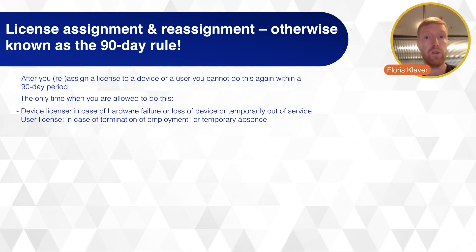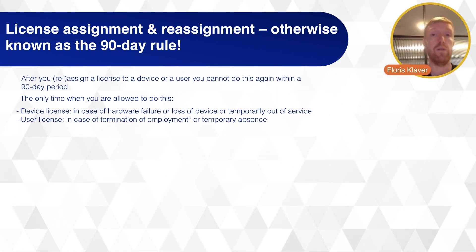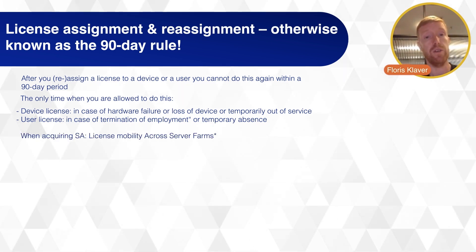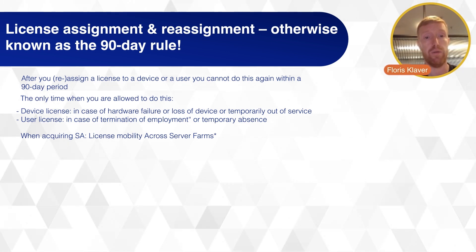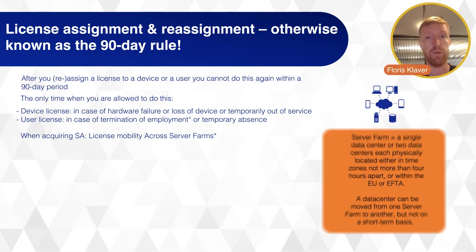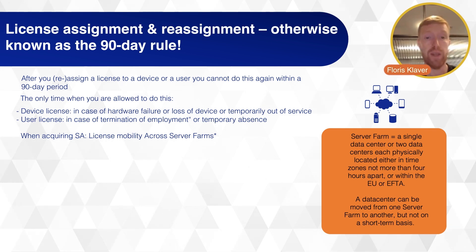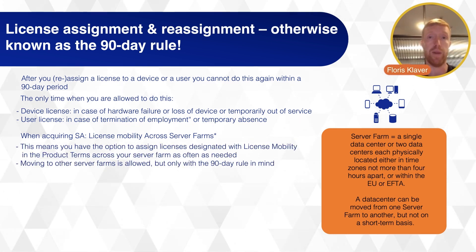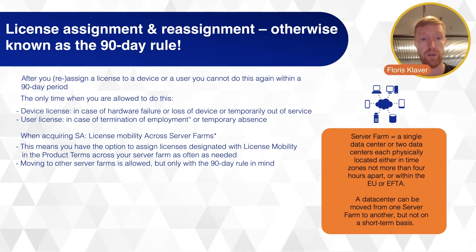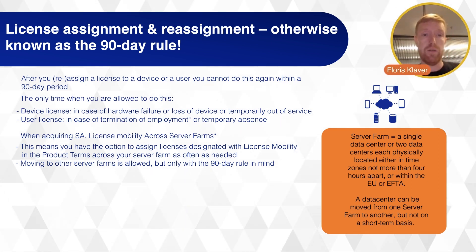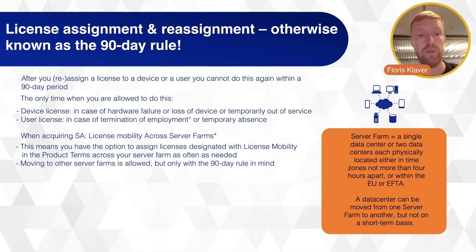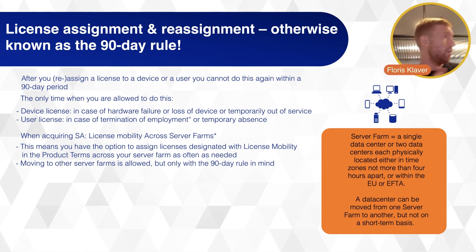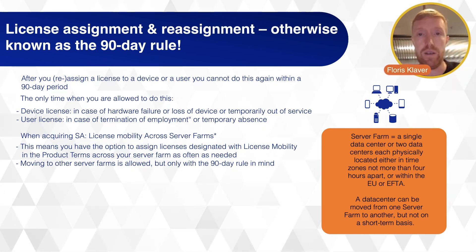There is one big solution that a lot of companies stick to, and that is acquiring Software Assurance. When you acquire Software Assurance, license mobility through cross-server farms comes into play, which means the 90-day rule can be disregarded. When you have Software Assurance for your licenses, you are allowed to reassign your licenses as often as you want — so you can assign a license today to one device and tomorrow assign it to another device with no issue.